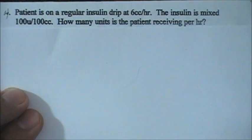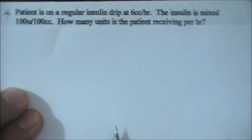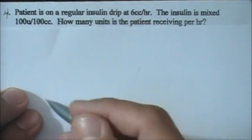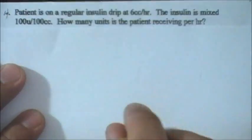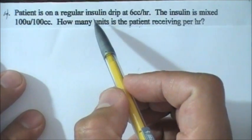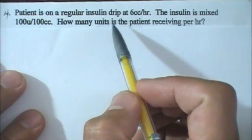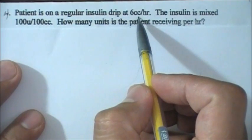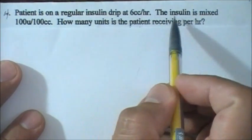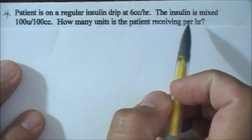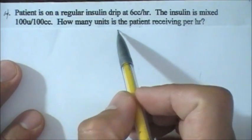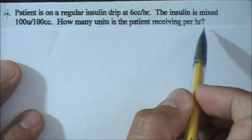Another problem we have here is getting units per hour, and for the first time we have regular insulin — a regular insulin drip. The patient is on a regular insulin drip at 6 ml per hour, and insulin is mixed with 100 units per 100 ml. How many units is the patient receiving per hour?